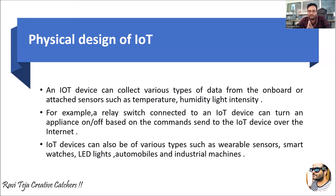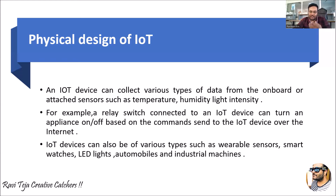An IoT device can collect various types of data from onboard attached sensors — for example, temperature, humidity, light intensity, etc. A relay acts as a switch used in many IoT home appliance devices to turn a particular appliance on and off over the internet. IoT devices can be of various types: wearable sensors like a smartwatch, wearable glasses for the blind, controlling LED lights, sensors placed in automobiles for tracking vehicles, or applications in industrial machines as well.